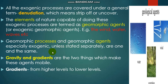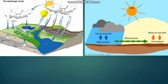Gravity and gradients are the two things which make these agents mobile. We're talking about water being a geomorphic agent. Water from oceans and other water bodies, and also from plants, is evaporated due to the heat of the sun. This leads to the formation of clouds, which cool down and pour rain on the earth's surface. Due to this rain, water runs over the surface in streams and rivers, and these are one of the main reasons for erosion to occur. So the sun is the driving force for the movement of water.